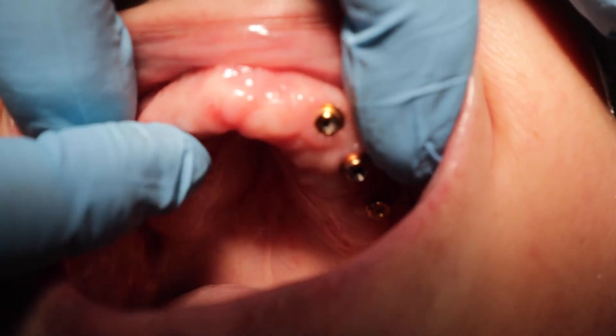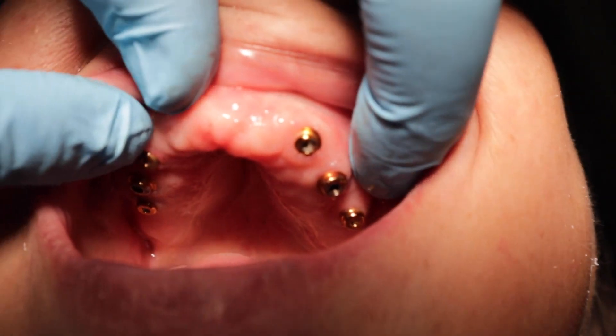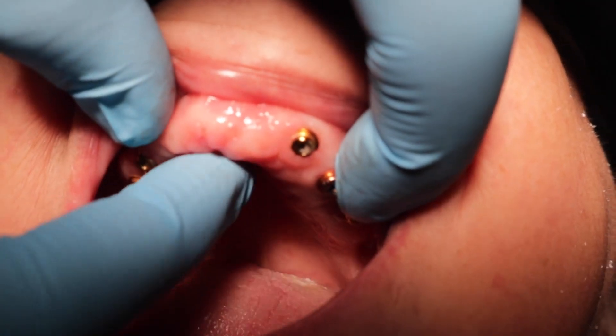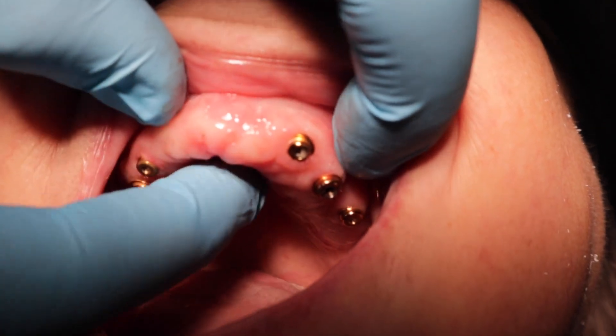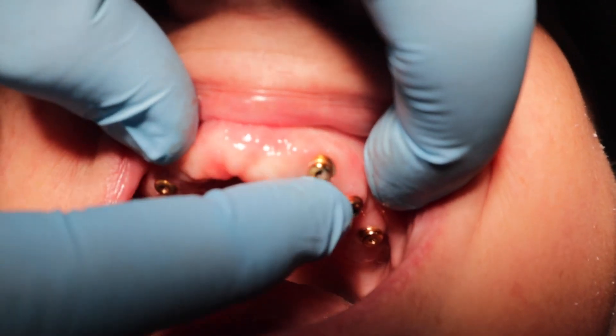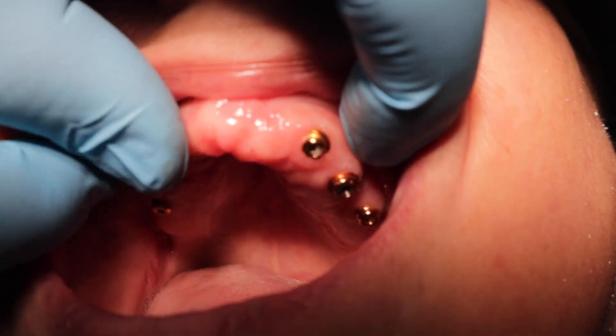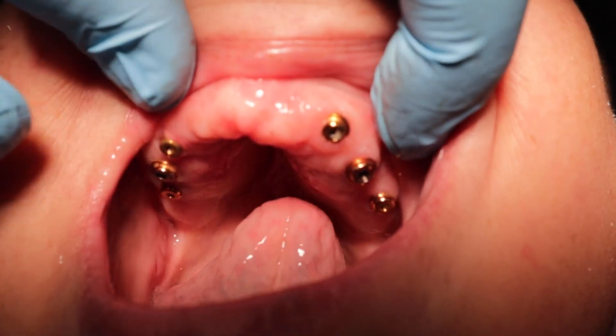So this is going to be our patient for the course. She's actually already restored with a nice overdenture, but I'd like to take you through all the restorative steps anyhow. She's got a really high palate right here, so it's kind of hard to take a good impression, but I'll show you guys how to take the impression. In the next lecture I'll show you how to pick the right abutments for each site, but we're going to basically restore this from start to finish starting now.